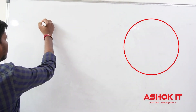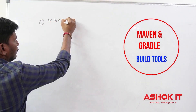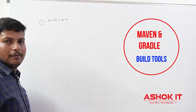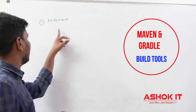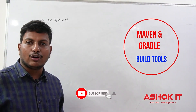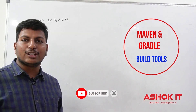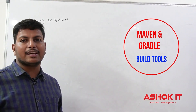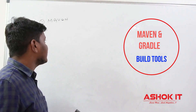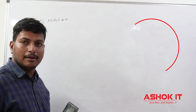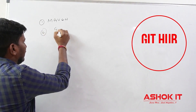First one: Maven. Maven we will call as a build tool. Maven is used to automate the build process of our application, like downloading the dependencies of the project, compiling the source code, executing unit test cases, and packaging the project as a JAR file or WAR file. Those tasks can be automated by using Maven.